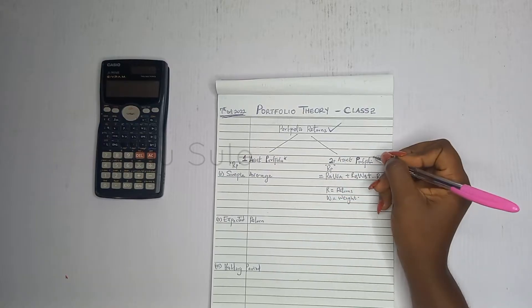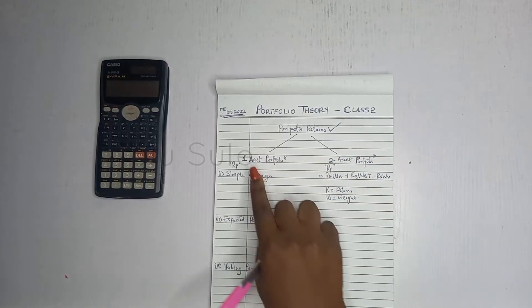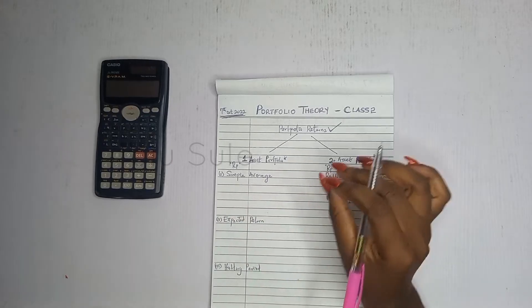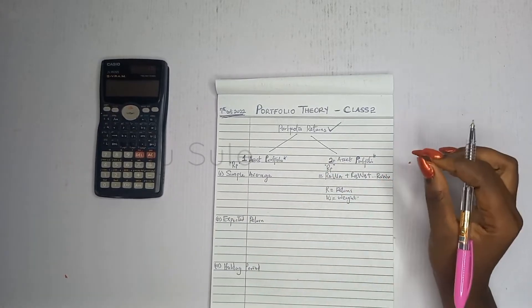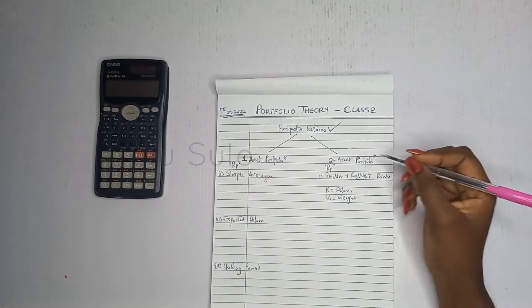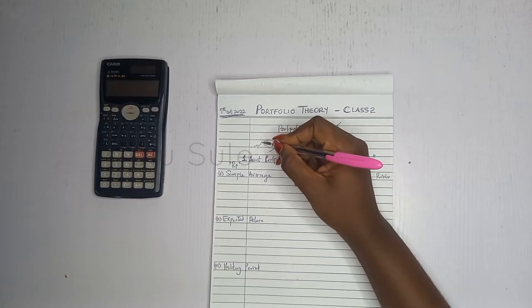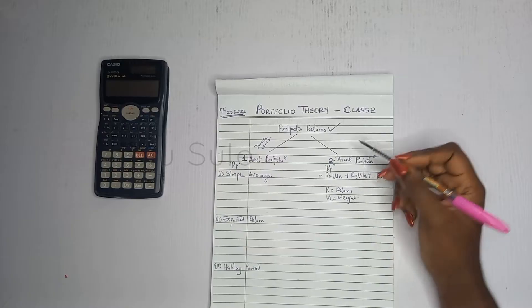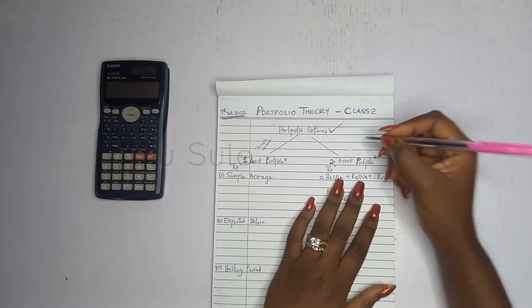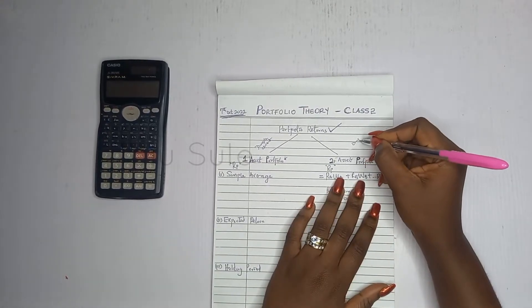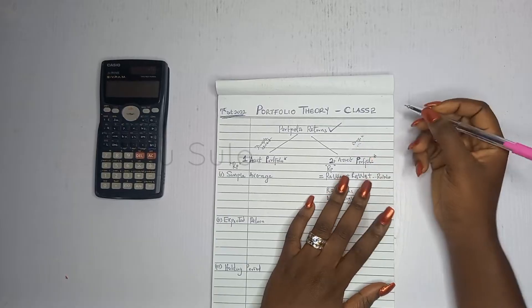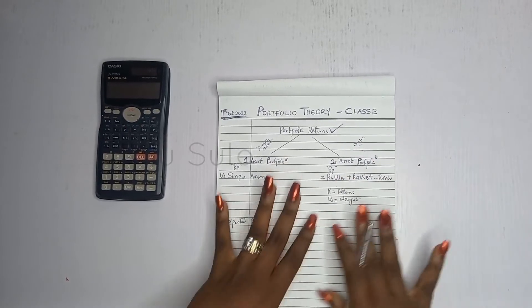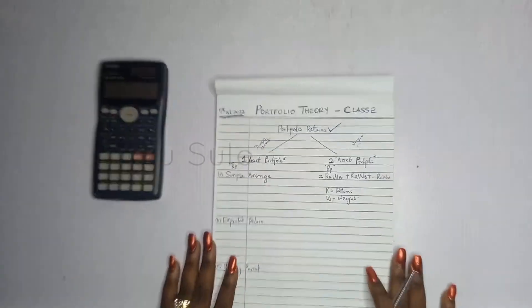To calculate your portfolio returns, you need to understand if you have a one asset portfolio or a two asset portfolio. A one asset portfolio implies that the investor has just one security — say you bought shares in Dangote Cement. A two asset portfolio means you can have multiple assets, like shares in Dangote Sugar, Dangote Salt, Milo, UBA Bank, and many others.